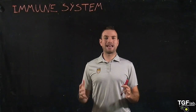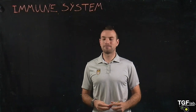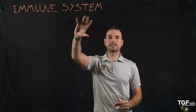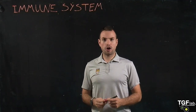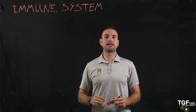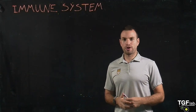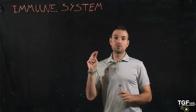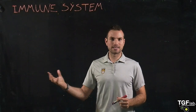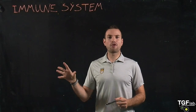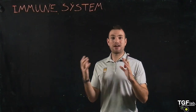Hello everyone and welcome to another class of Physiology for Engineers with Professor González Fernández at Lehigh University. Today we're going to look at the immune system, which is composed of all the cells and chemical mediators that target and destroy different pathogens — viruses and bacteria — that invade our body. There are two different types of immune responses: the innate immune response and the adaptive immune response, and they are very different.